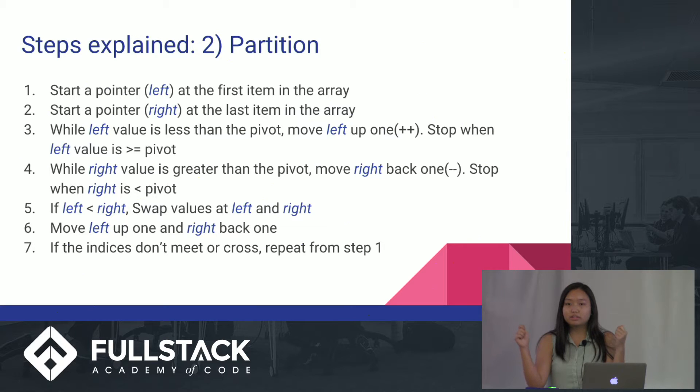You first start with the left pointer and you compare the value at the left to the pivot. If it's less than the pivot, you continue incrementing the pointer. When you hit a value greater than the pivot, you stop. And then you do a similar thing for the right one, but you compare if it's greater than the pivot. Once both the left and right have stopped, you swap both values, and then you move the left and right up one again, and then you continue until the left and right either hit each other or cross.